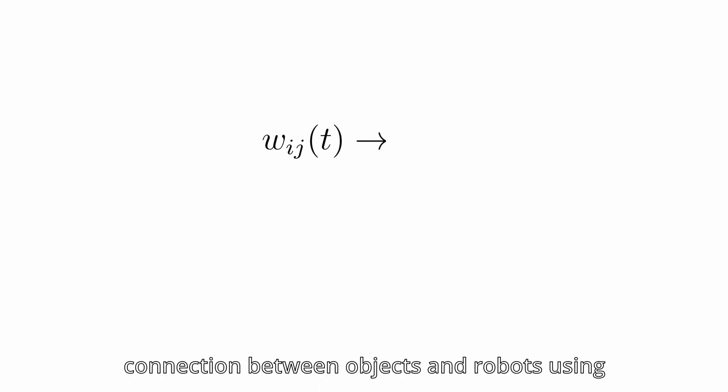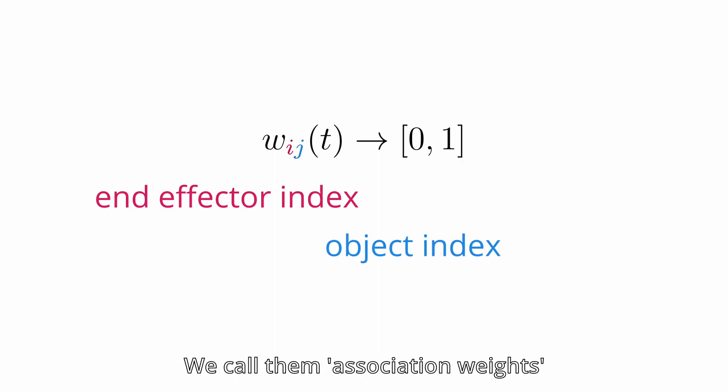However, here we are exploring a different option. Our main contribution is to model the connection between objects and robots using real-valued, time-dependent functions. We call them association weights as they associate a particular object to a particular end effector.